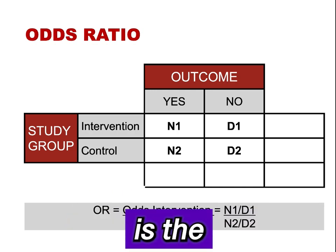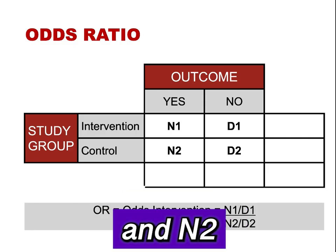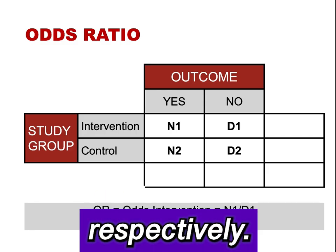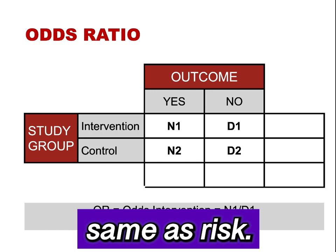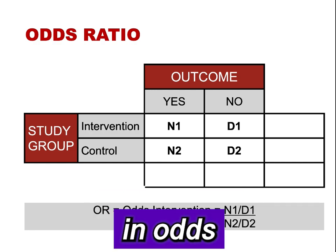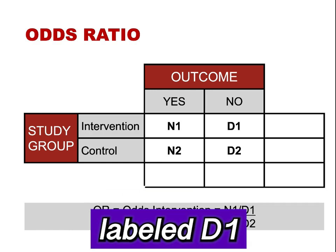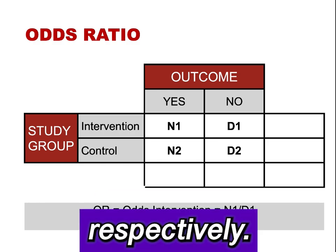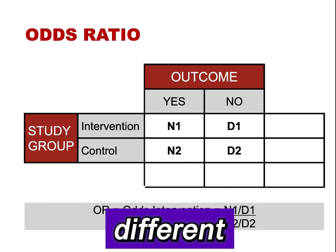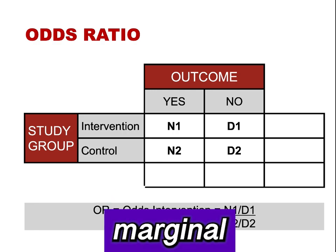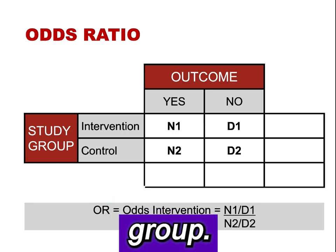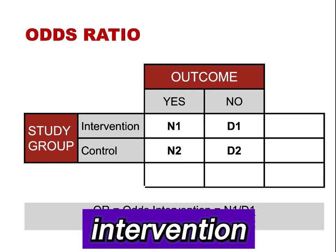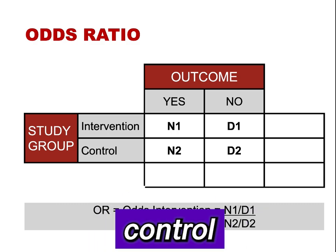For odds, the numerator is the yes-outcome cell labeled N1 and N2 for the intervention group and the control group, respectively. This is the same as risk. The denominator in an odds is the no-outcome cell labeled D1 and D2 for the intervention group and the control group, respectively. This is different from risk, where the denominator is the marginal total in each group. By convention, an odds ratio is the odds of the intervention group divided by the odds in the control group.